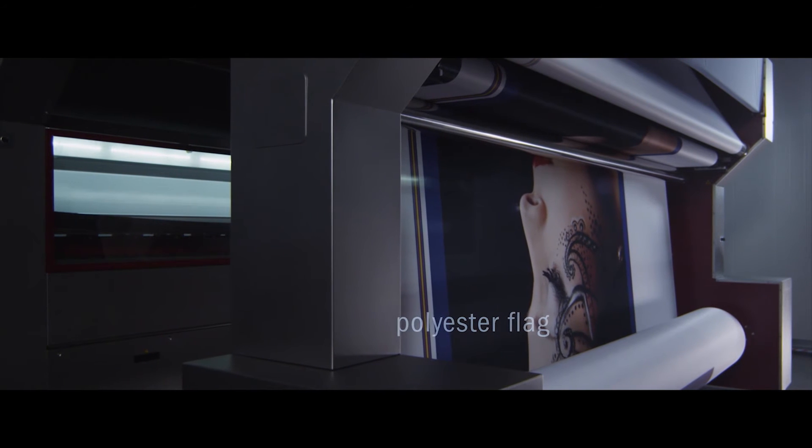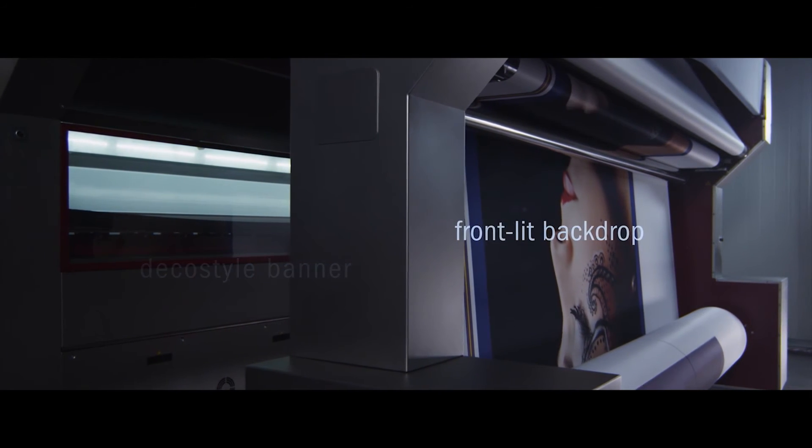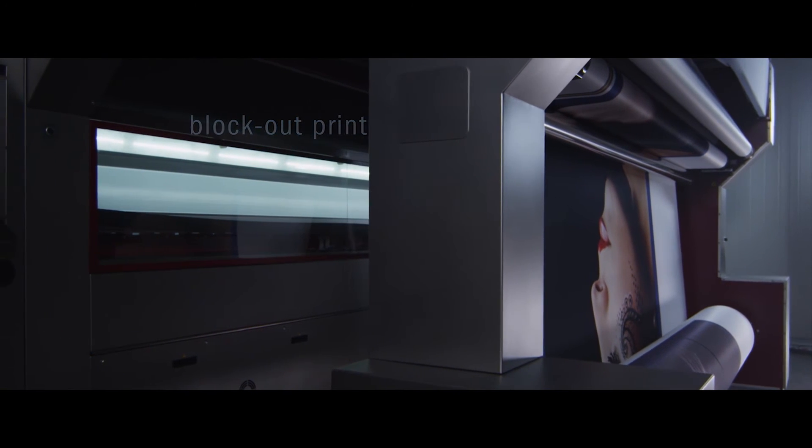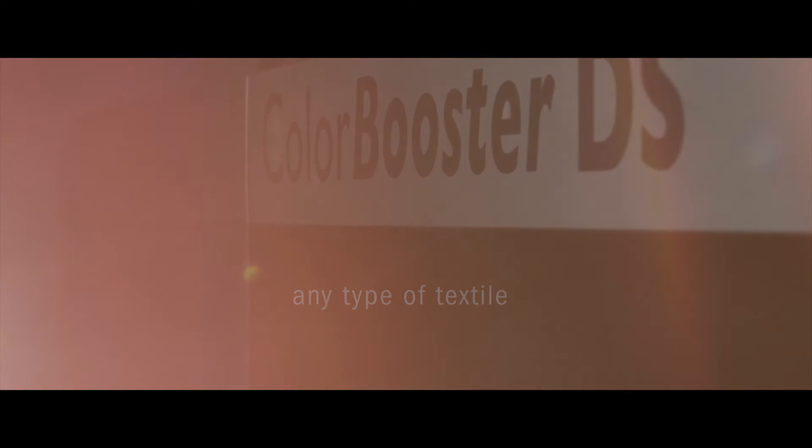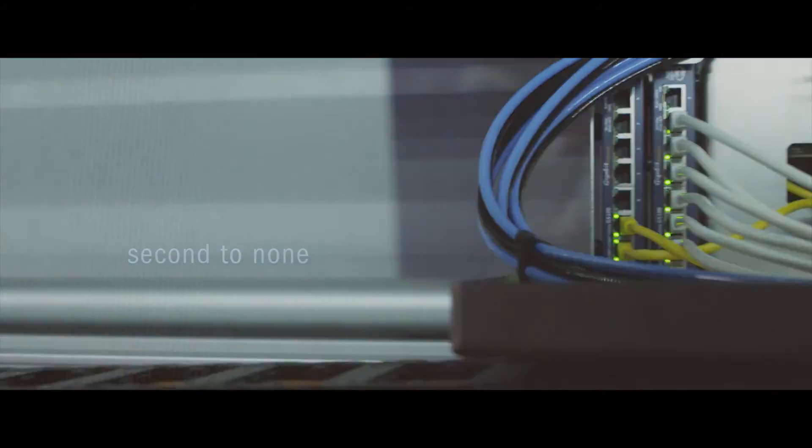...flag, a deco style banner, a front-lit interior backdrop, a backlit retail frame, a block-out print, or any other type of visual communication printed on textile. The Hollander's ColorBooster DS is second to none. Be surprised, get captivated...